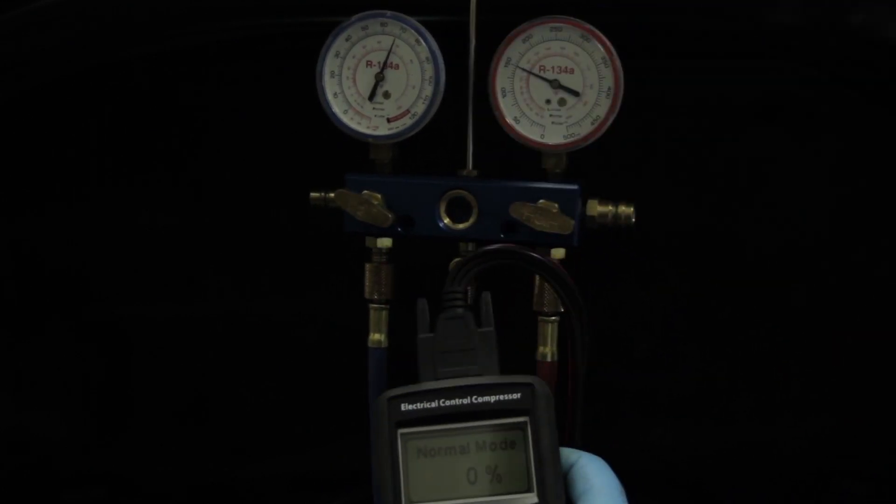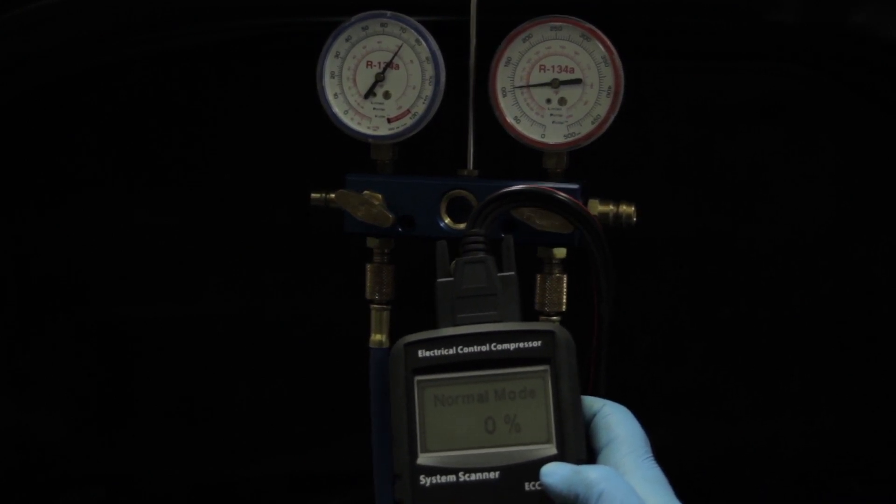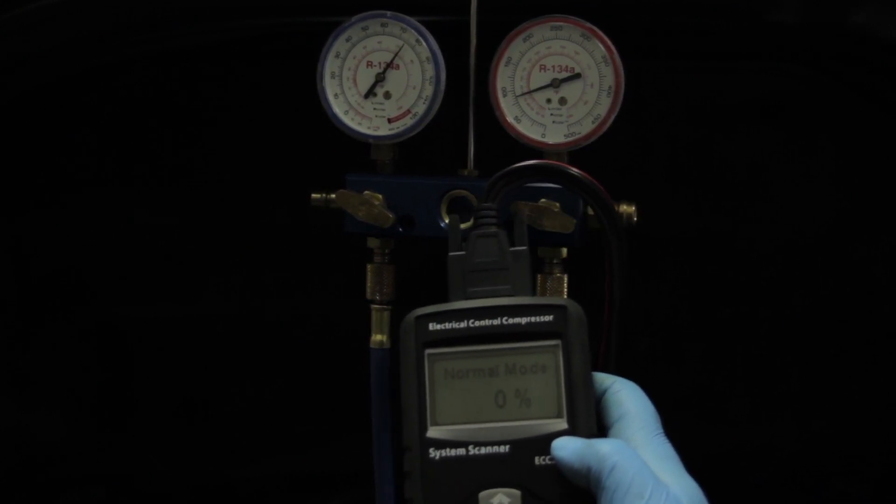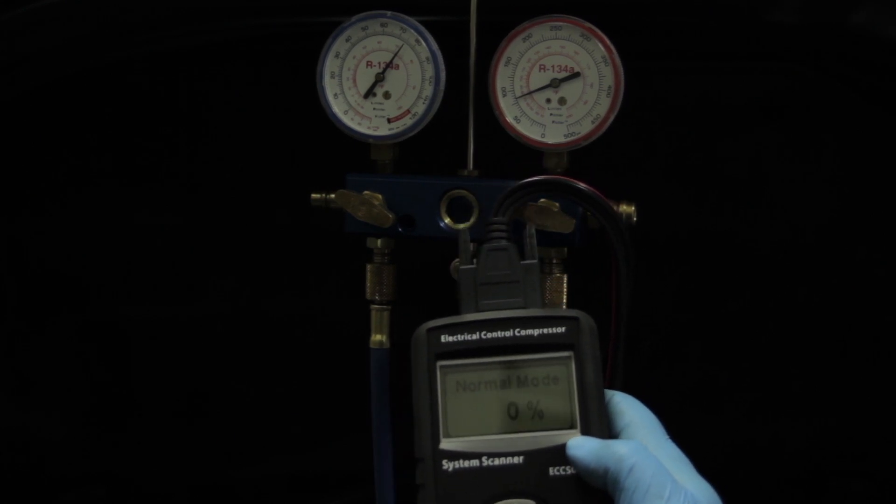Now if I go back to normal mode, we notice that our gauges drop right back down to those static pressures. So, right away this tells us, using the TempSelect tool, that the compressor side of the equation is okay.